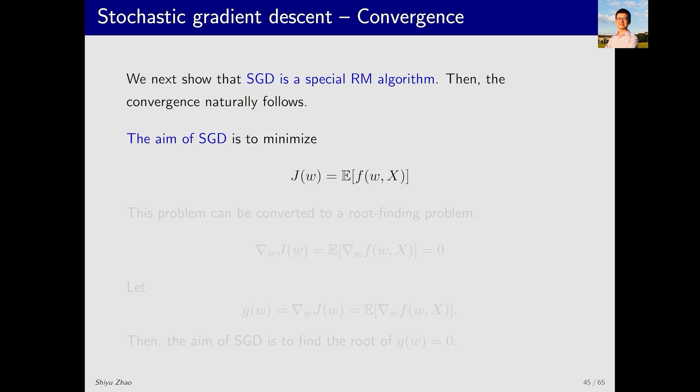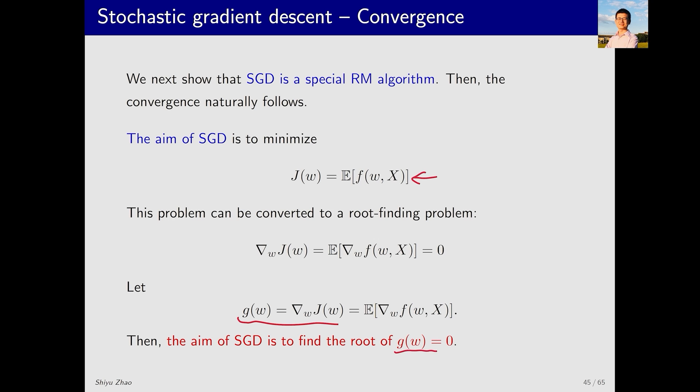Here I just show that SGD is a special RM algorithm. What problem is SGD trying to solve? It aims to minimize this objective function. This optimization problem can be converted to a root-finding problem. Specifically, the necessary condition for this objective function to be optimal is that its gradient should be zero. If we let G(w) be this gradient, solving this optimization problem becomes solving this equation G(w) equals zero.